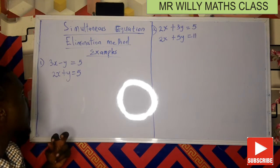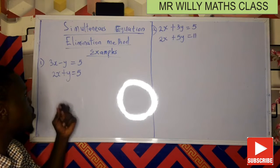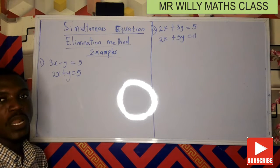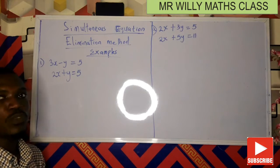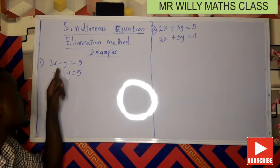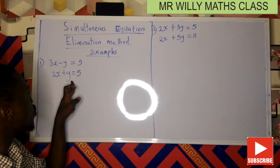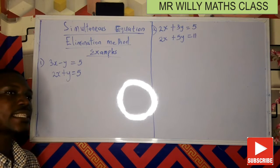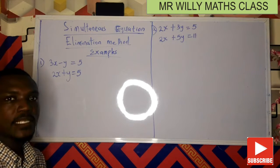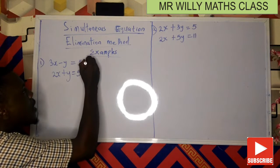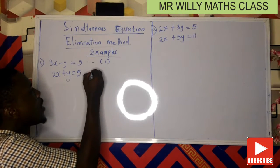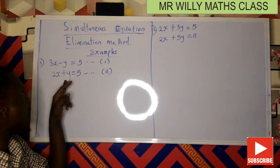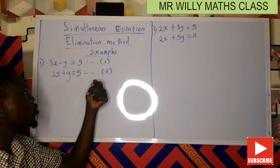Looking at these two equations, you'll see that y in both equations has a similar coefficient. A coefficient is the number placed together with, or multiplied by, a variable. The coefficient of y in equation one is 1, and in equation two it's also 1. Now, to get rid of y, we need to determine whether to add or subtract the equations. Since we have minus y and plus y, subtracting would give minus 2y, so instead we add the two equations together.